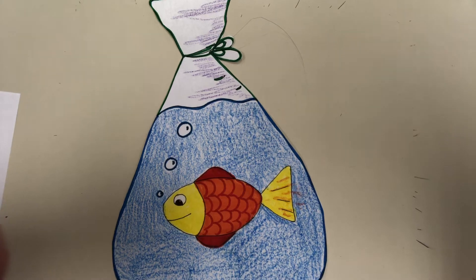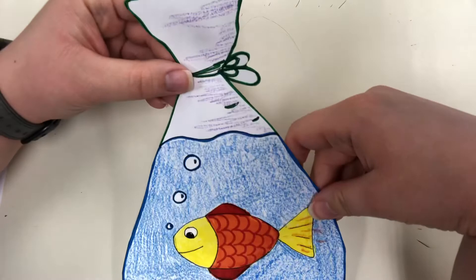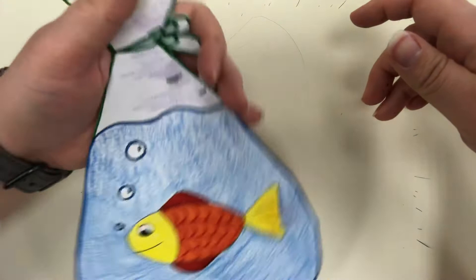Hey friends, for this drawing today we are going to be using cool and warm colors to create a little fish drawing that looks like a fish that you've caught that you've won at the fair. Looks like a little bag with a fish in it.